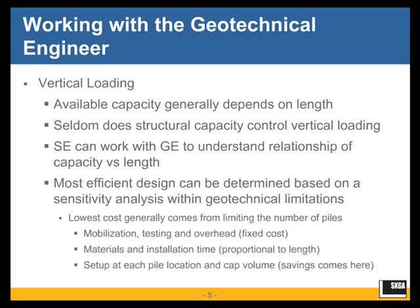If you look at where costs come from in a deep foundation system, there are fixed costs such as mobilization, testing, and overhead, and then costs proportional to pile length — how long it takes to install and the cost of materials. There are also setup costs at each location, as well as cap volume. You can get savings by reducing the number of piles — for example, changing from a four-pile cap to a three-pile cap reduces the cap volume, the number of piles, and the setup time required to install those piles.